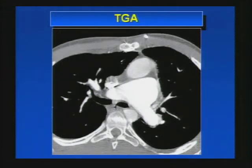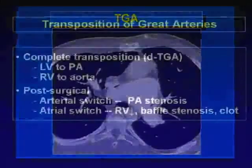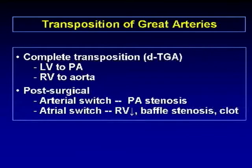This axial CT demonstrates d-transposition of the great arteries — the aorta is anterior and to the right of the pulmonary artery, typically seen with complete transposition. In complete transposition, the left ventricle connects to the pulmonary artery and the right ventricle connects to the aorta.